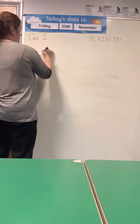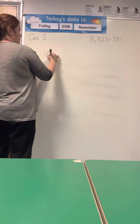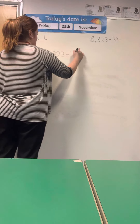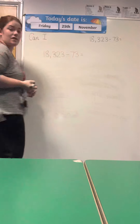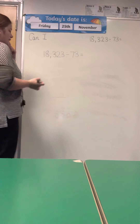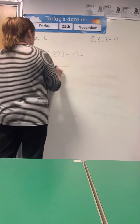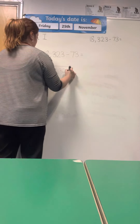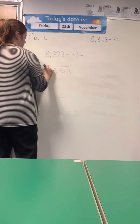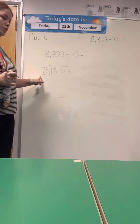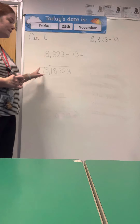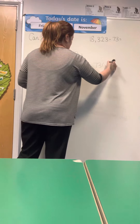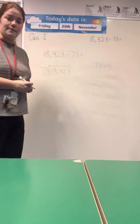We're going to look at another one now. This time I'm going to do 18,323, and I'm dividing it by 73. So again, I'm going to set it up just as I would for short division. And I'm now going to work out my multiples of 73. I'm going to start with 73, and again I know that's times 1.